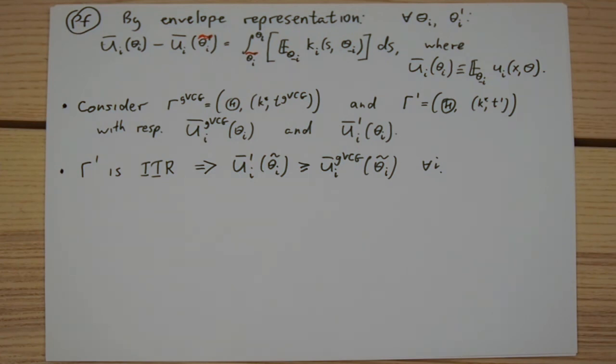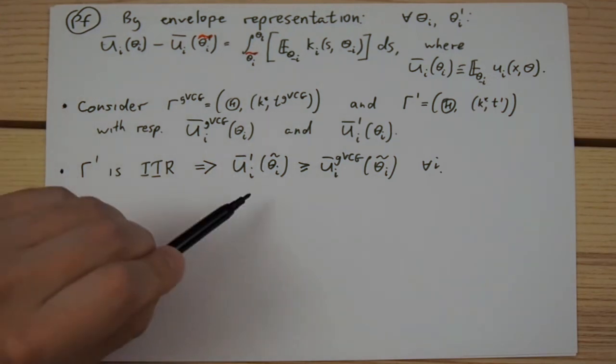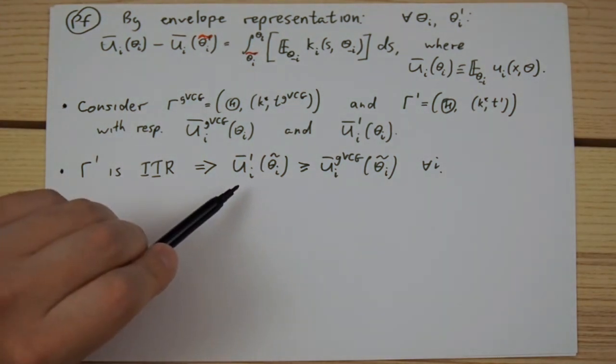the expected utility of the least charitable type must be at least as large in this mechanism as it is in the generalized VCG mechanism.